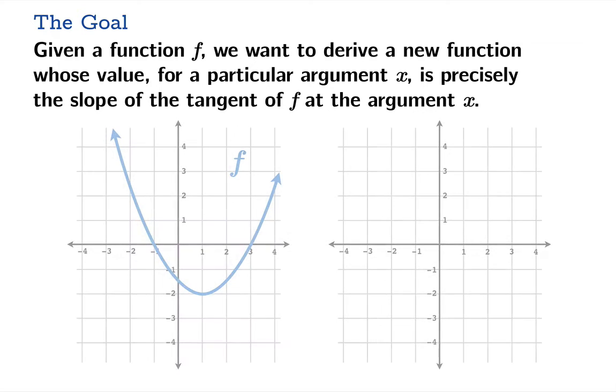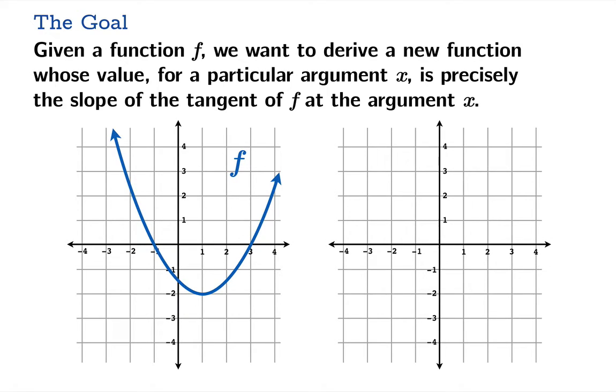That is a mouthful, so let's really see what this means graphically. On the left side here we have the graph of a function f, and what we'd like to find on the right is a graph of the tangent slope function derived from f.